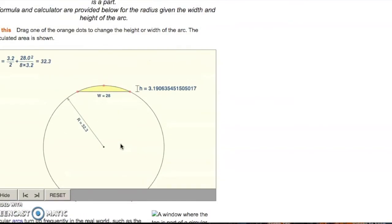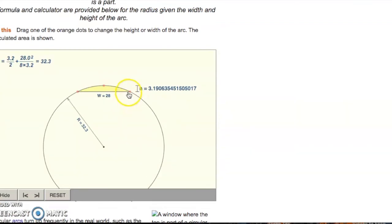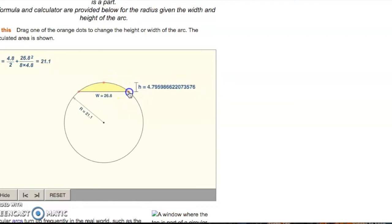After that, double check your answer by putting it in here. Here, I had an example where my height was three centimeters and my width of the arc was 28 centimeters and then I calculated a radius of 32.3 centimeters. Now, you can even move this height to change the height for your other percentages of gravity that were represented. You can also change the width here and double check your answer from the formula that you used.